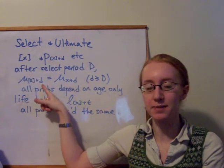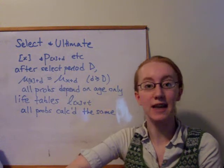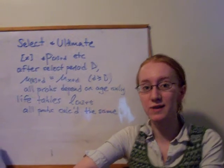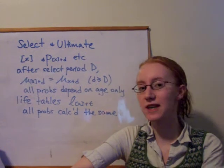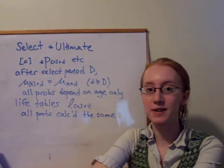So the mu x in square brackets plus d, we don't care about the square brackets anymore, we just care about the age. That would be mu x plus d. And same with the p's and q's and deferred q's. We just drop the square brackets if the duration since selection is bigger than or equal to capital D.